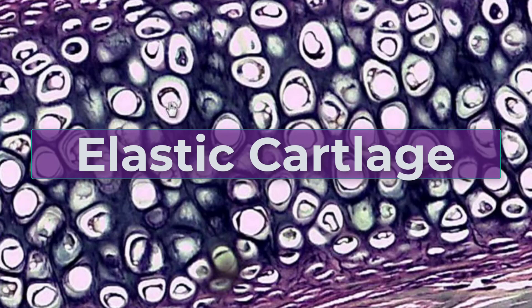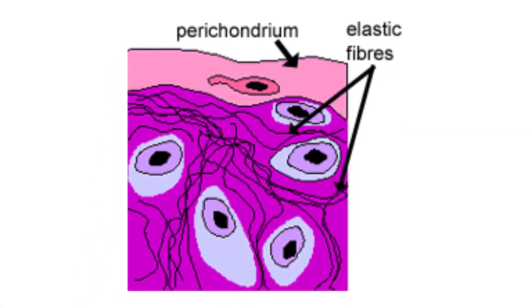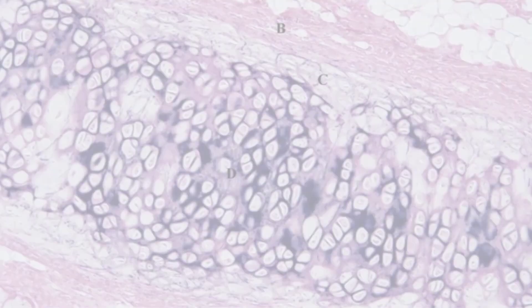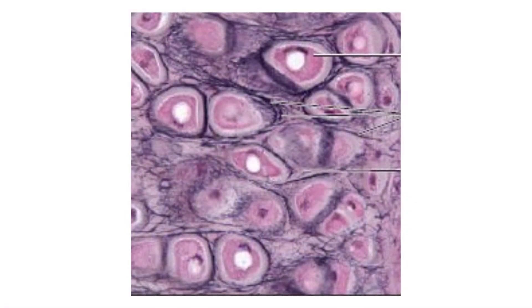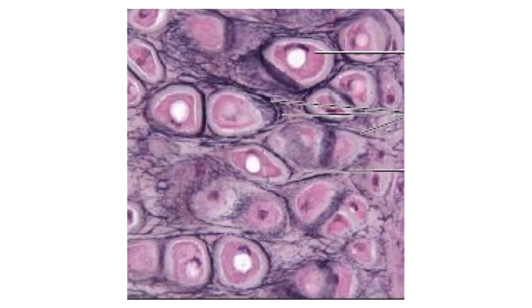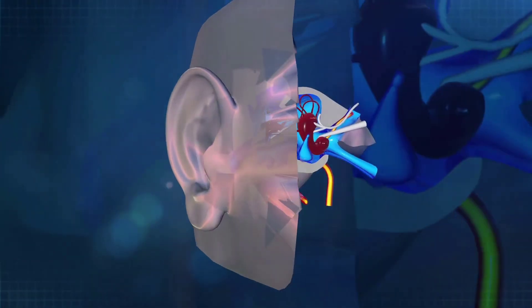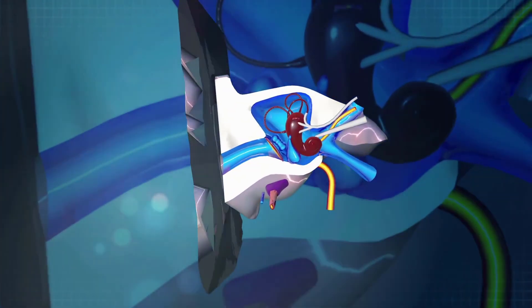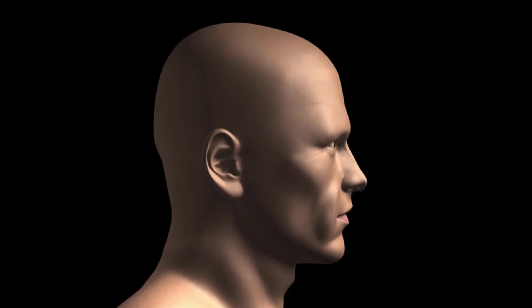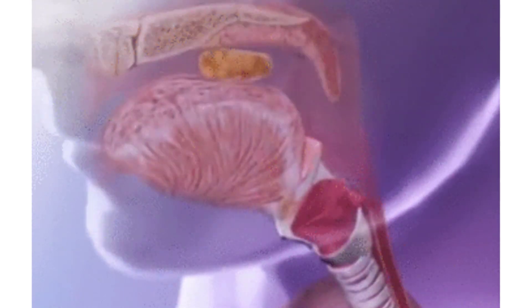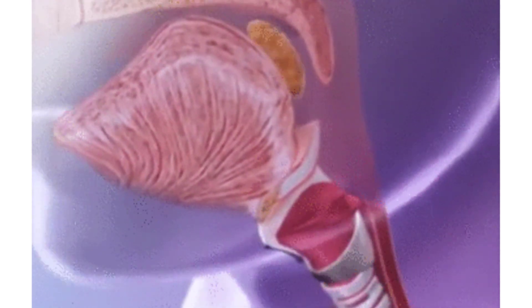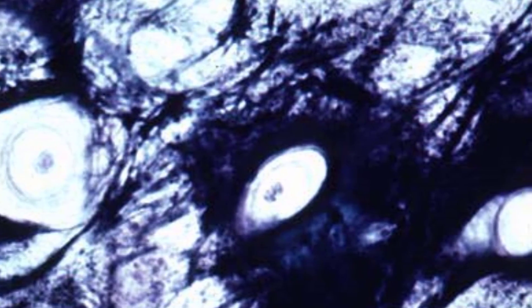Elastic cartilage contains a lot of elastic fibers with thin collagen fibrils in its matrix. This cartilage is more elastic than hyaline cartilage, and this extra elasticity allows for better tolerance of repeated bending. The body has elastic cartilage tissue in the eustachian tube, which regulates inner ear pressure. It also forms the structure of the outer ear called the auricle and it forms the epiglottis. The epiglottis bends down to cover the glottis — the opening of the larynx — each time we swallow; this structure is made up of elastic cartilage and is highly bendable.